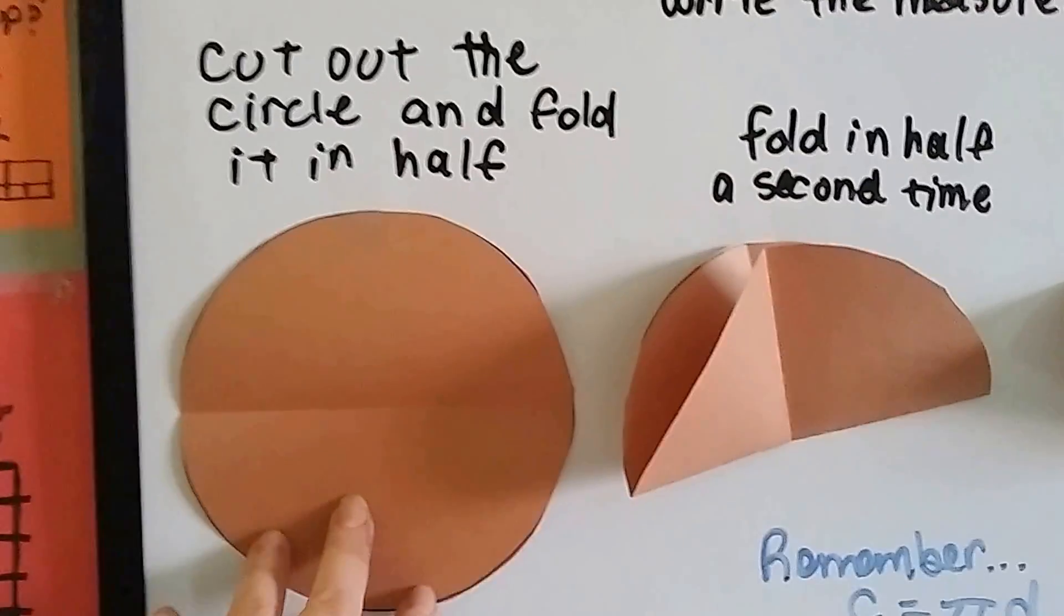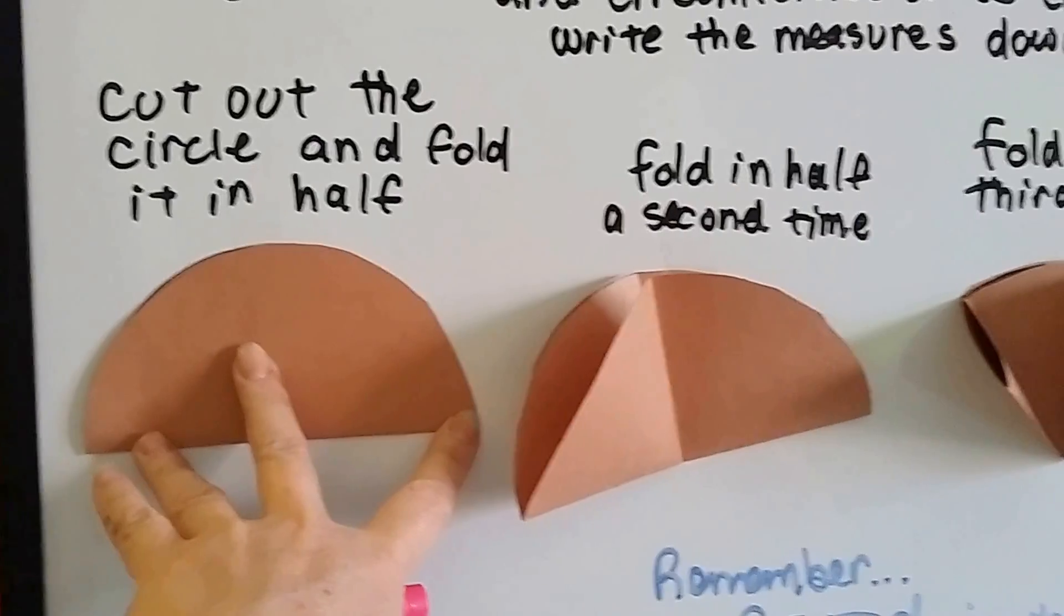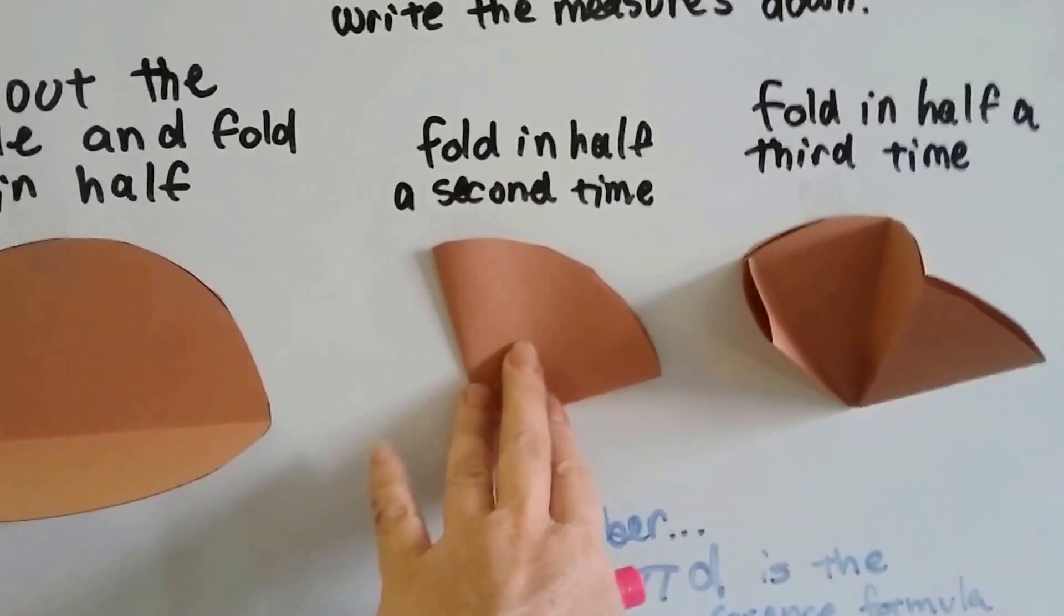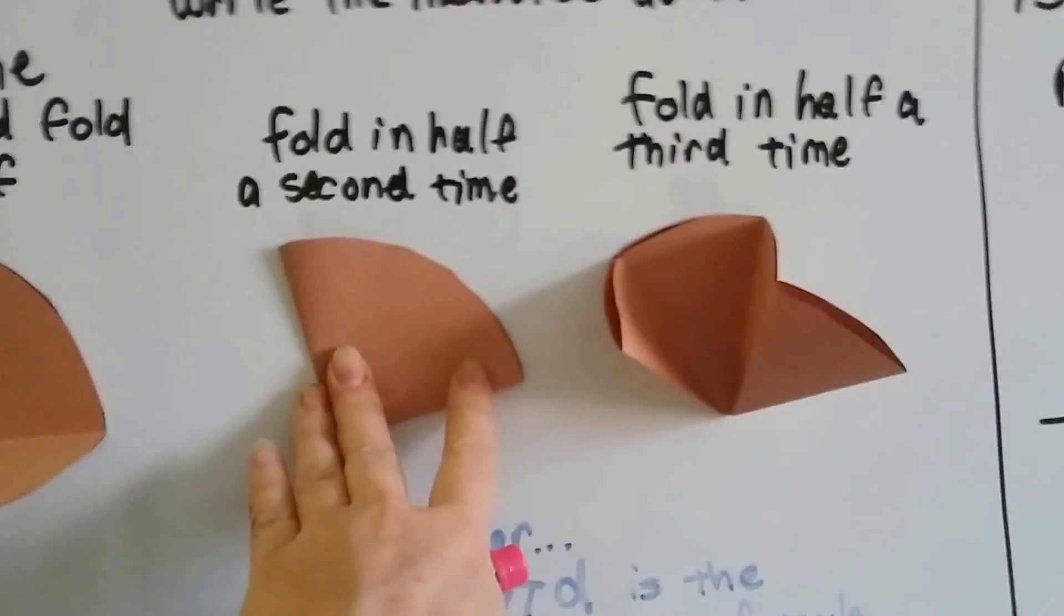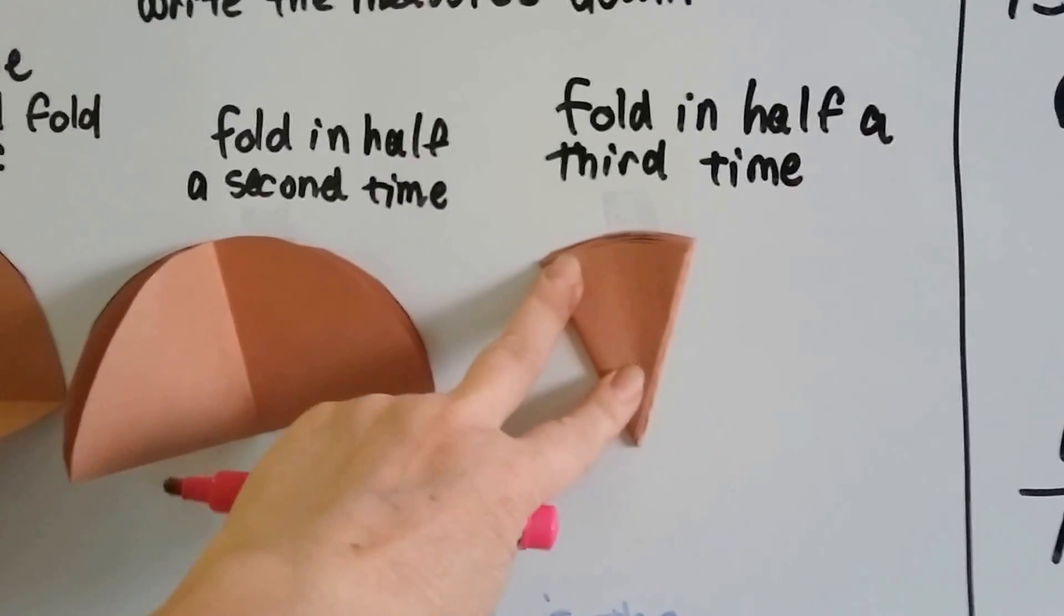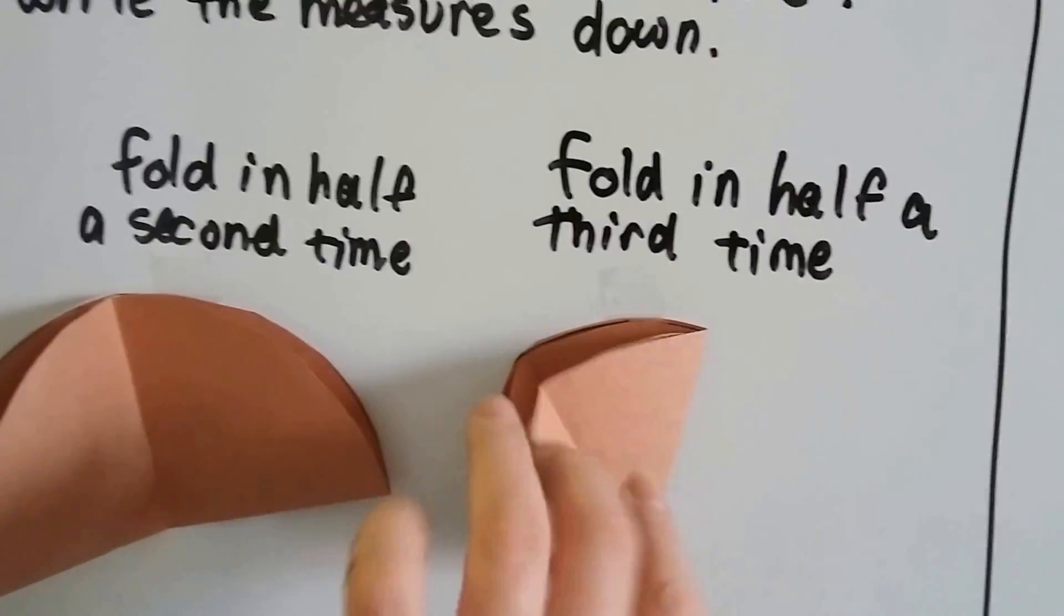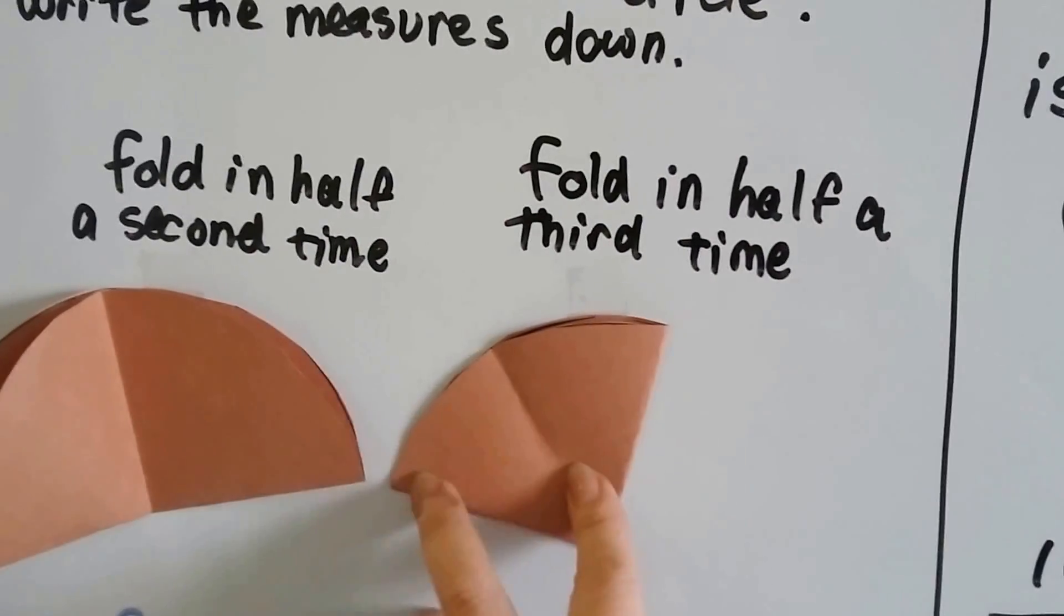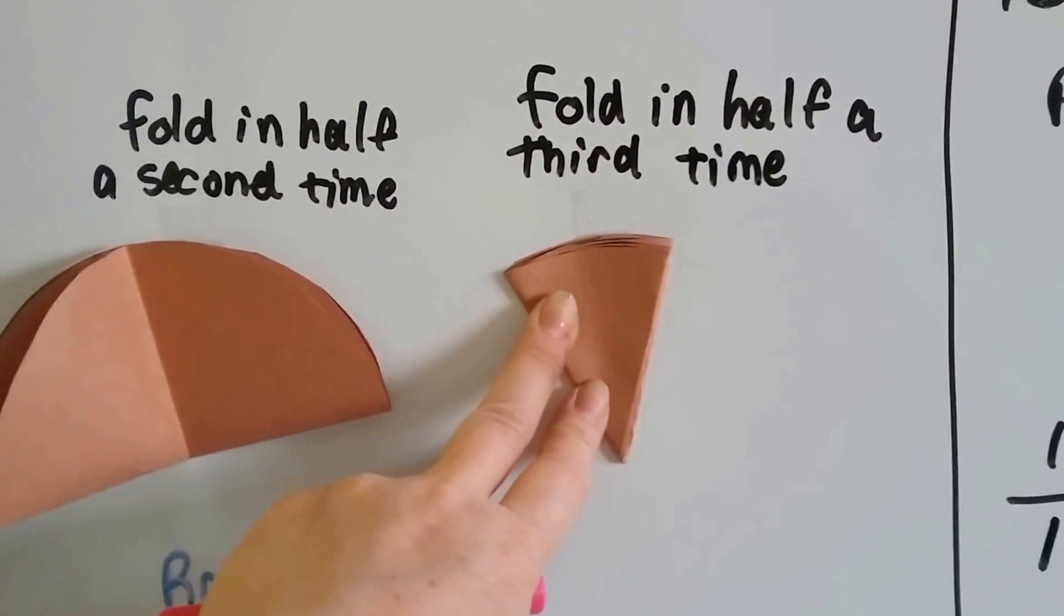Then cut out the circle and fold it in half like this. Then fold it a second time so it looks like this, so it's folded into four pieces. Then fold it in half a third time so it actually is really tiny like this. See how it's folded? This would have been once, that's twice, and that's three times. So it's real tiny like this.